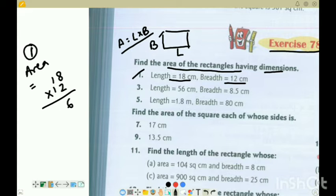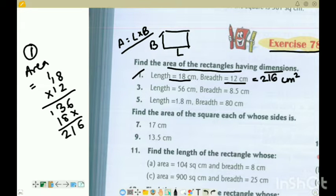First question: area where length is 18 and breadth is 12. Question 1, area will be equal to 18 into 12. 18 into 12: 8 times 2 is 16, 1 times 2 is 2, and 3 is 36. This is 18, so 6, 8, 9, 10, 11, 1, 2. So 2, 1, 6. Area is 216. What is the unit? Centimeter square or square centimeter. We can also write this.